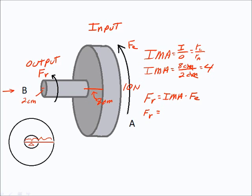the IMA for our wheel and axle is four, and we're going to multiply that by the effort force. The effort force we put in is 10 newtons, and four times 10 is 40.